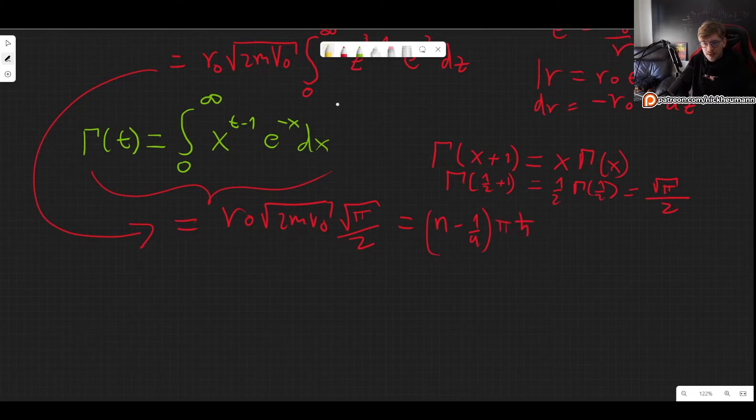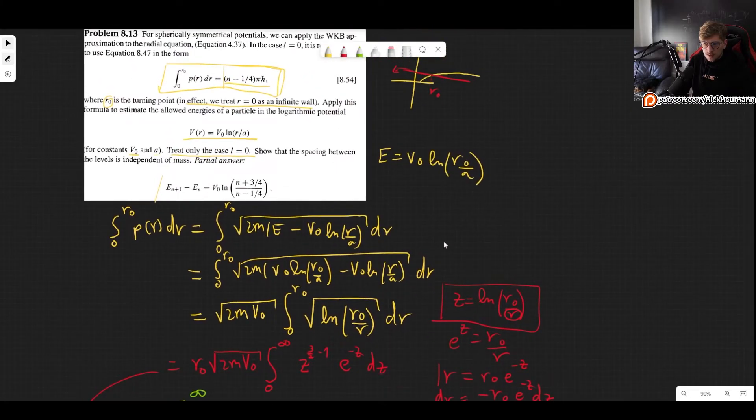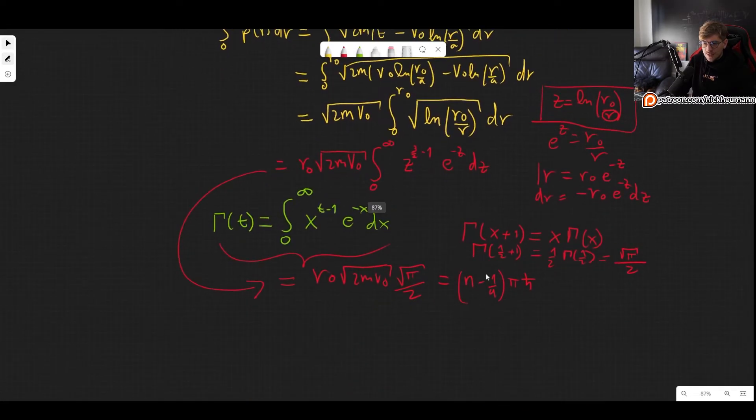But there is no energy here at least not explicitly, but we have R0 and R0 also appears in an expression for the energy. So what we can do is find R0 from the equation that we got by solving the integral and then we plug it in here. And then we will have an expression for the energy.